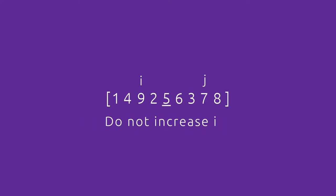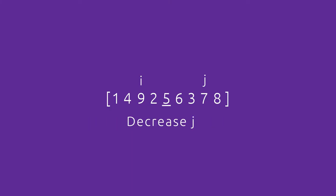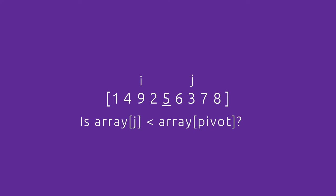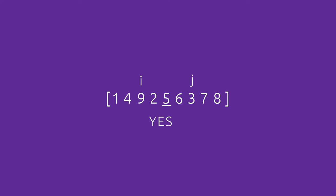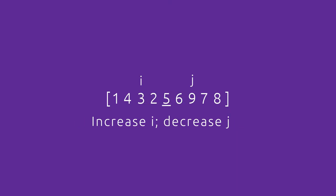At this point the value at i is greater than the pivot so we don't increase it anymore. However j is still greater than the pivot so we keep decreasing it. Now j lands on value three, which is less than the pivot, so we make another exchange, then increase i and decrease j once more.